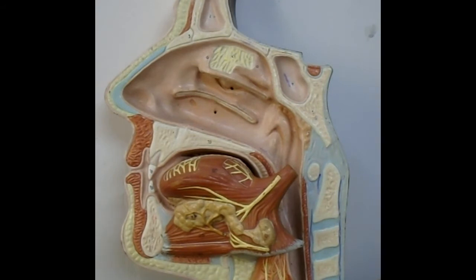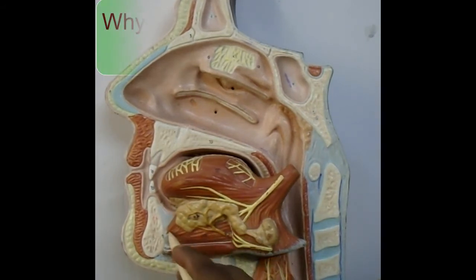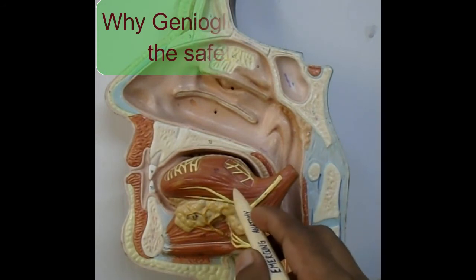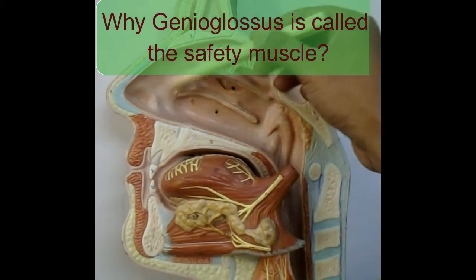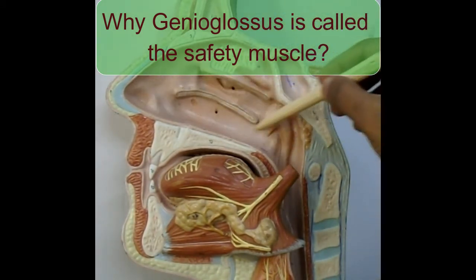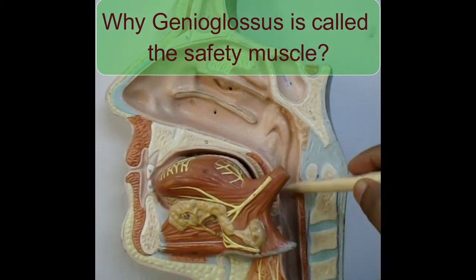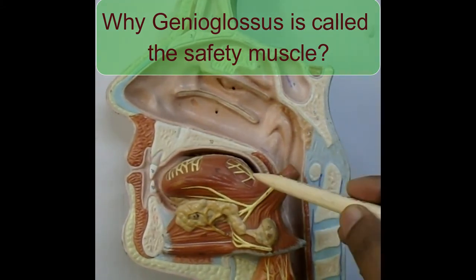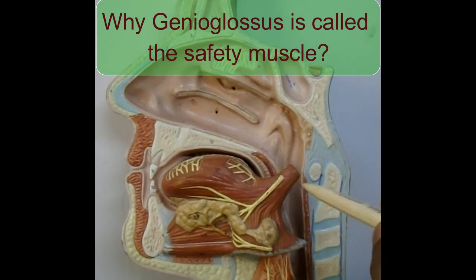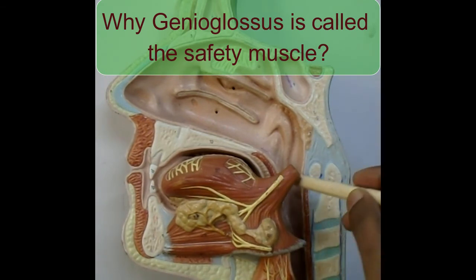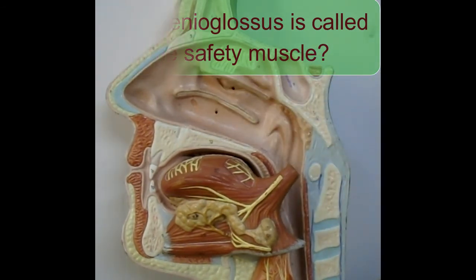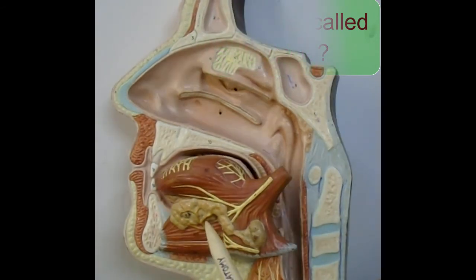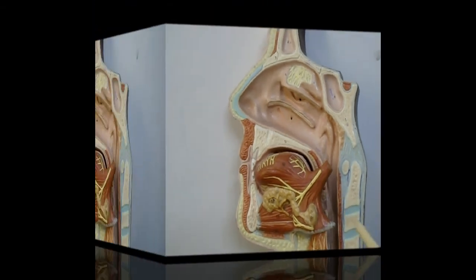You have to know this to understand lesions of the hypoglossal nerve in your clinical practice when you become a neurologist. The genioglossus is also termed the 'safety muscle of the tongue' because it holds the tongue in such a position that it cannot fall back into the respiratory tract. If the tongue were to fall back into the oropharynx along with the soft palate, the respiratory passage would be blocked. So the genioglossus prevents the falling back of the tongue into the respiratory tract.